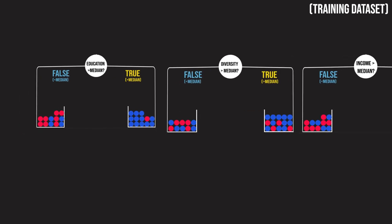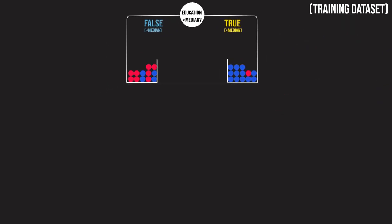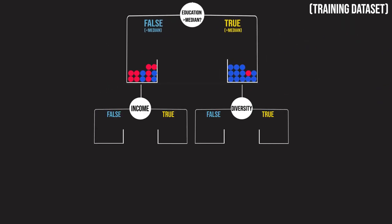After making the first split on education, we now look at the two resulting branches and once again look at which variables we can split on to further purify our branches. This continues until we reach pure branches or the maximum depth of the tree.